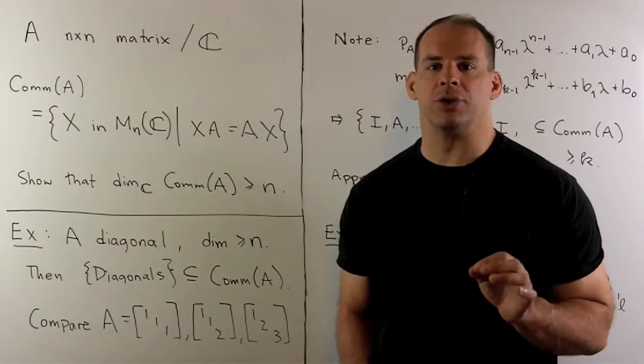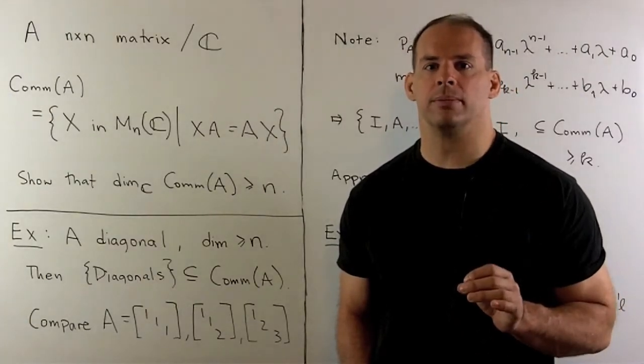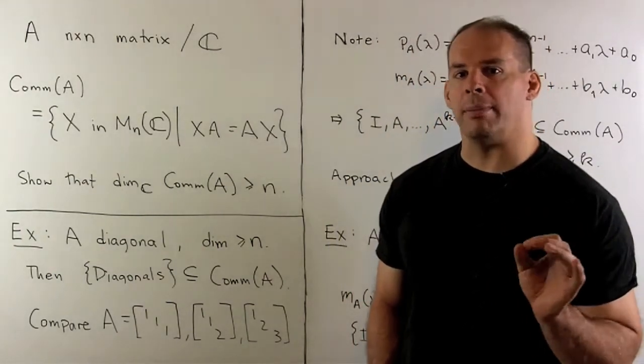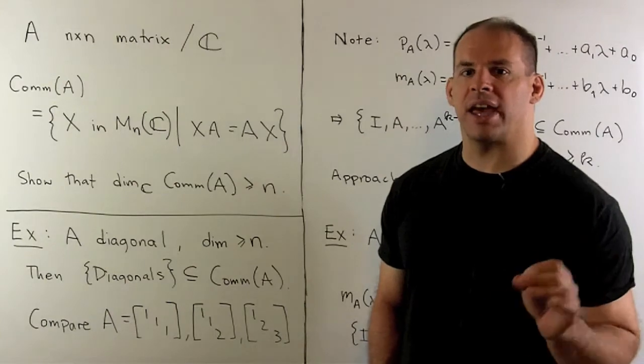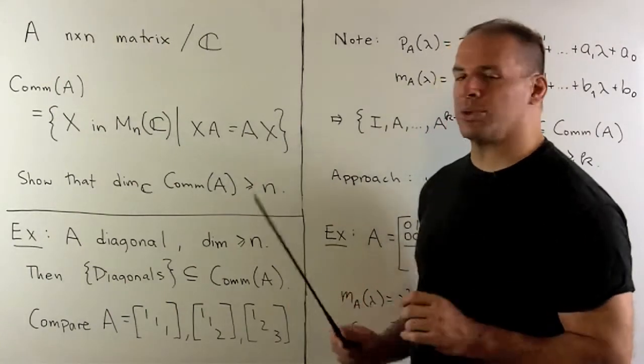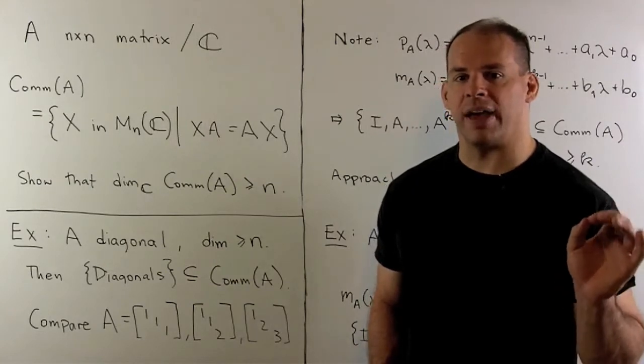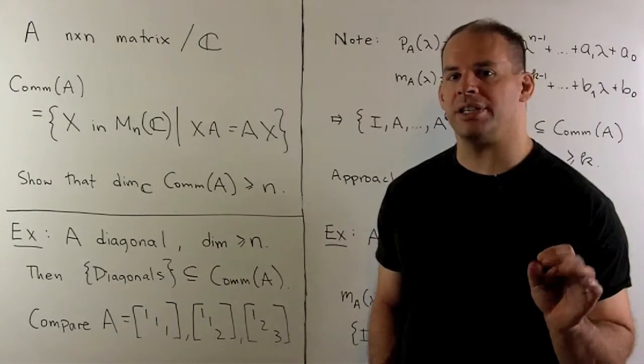Let A be an n-by-n matrix over the complex numbers. We define the commutant of A to be the set of all n-by-n matrices X such that X times A equals A times X. That is, the commutant of A is the set of all matrices that commute with A.